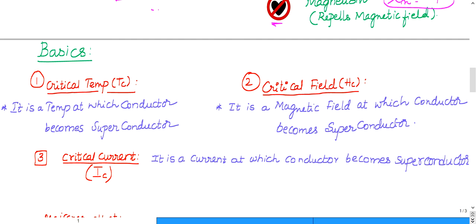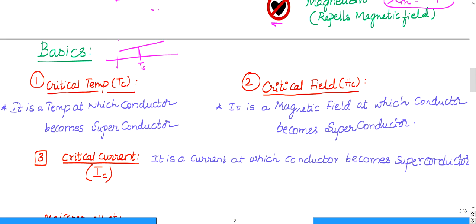Critical temperature (Tc) is the temperature at which a conductor becomes a superconductor. Below critical temperature it is a superconductor; at critical temperature it is also a superconductor; above critical temperature it becomes a conductor. What you need to understand is that at Tc the material behavior changes. Below Tc it is a superconductor; above Tc it is a conductor.